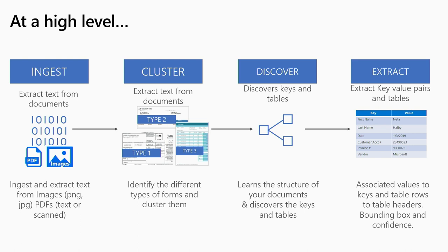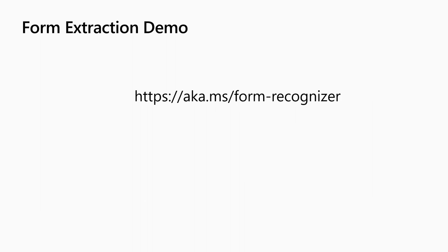When you train or analyze, the system first ingests data — inputs can be text PDF, scanned PDF, JPEG, or PNG. It then clusters the data based on structure and content type. After clustering, it discovers what the keys and tables are for each cluster, then extracts and associates values to keys and entries to tables, outputting structured data including bounding boxes and quadrants.